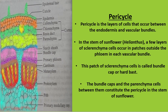In the stem of sunflower, a few layers of sclerenchyma cells occur in patches outside the phloem — particularly outer to the primary phloem. These pink colored sclerenchyma cells, which are dead cells found outer to the phloem, are known as the bundle cap or hardbast. The pericycle is found between the bundle cap and the parenchyma cells.